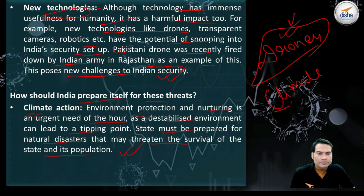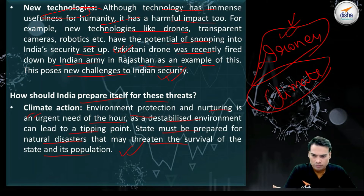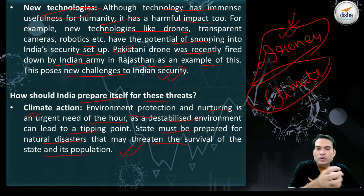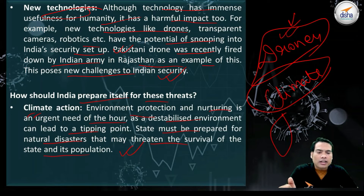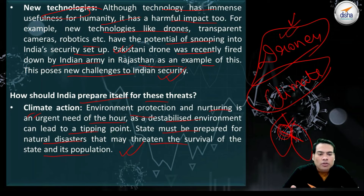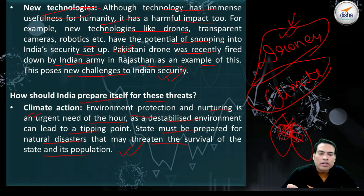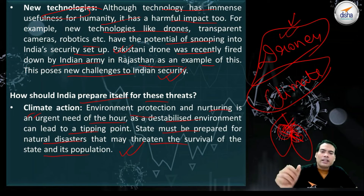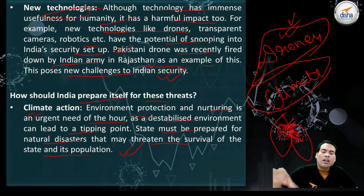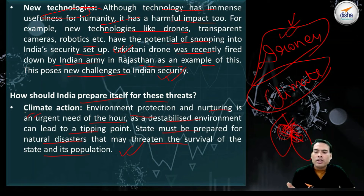Regarding climate action, situations arising from climate change - like the Karnataka and Tamil Nadu dispute - require specific agreements such as Supreme Court orders directing how many cubic meters of water must be maintained or discharged. Both state governments need to sit together and decide on a specific time-period plan for how much water to release and how to help people in both regions. That could be a climate action plan.